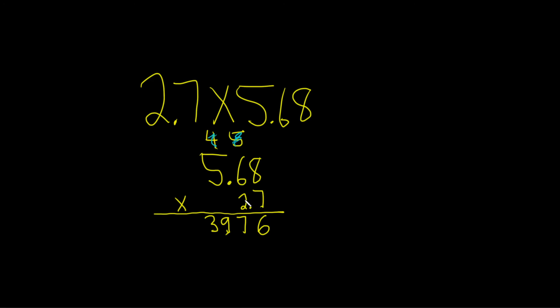2 times 8 is 16. So now we write the 6 right here. Then you carry the 1. 2 times 6 is 12, plus 1 is 13. You write down the 3, carry the 1. 2 times 5 is 10, plus 1 is 11, just like that. We put a plus sign.